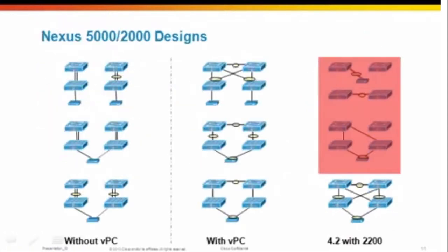Now let's talk about designs — all the options we have for VPC with our 5000 and 2000 series. On the left, you can see three designs without VPC: a single link between a 5K and a FEX, a port channel, or a pair of FEX connected to a server in active-passive mode where if one link fails the other comes up. With VPC, we provide high availability in case of failure of one of the switches or the fabric extender.